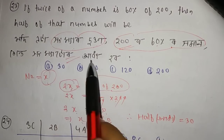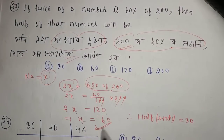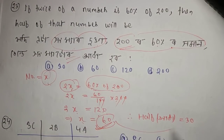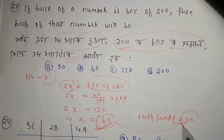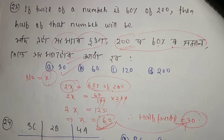So x equals 60. Now half of that number: 60 divided by 2 is 30. So the answer is 30. That is a very clear match.